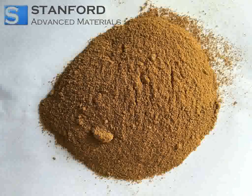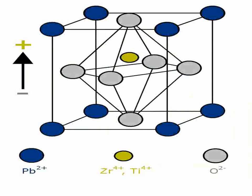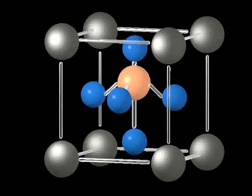Lead zirconate titanate is an inorganic compound with the chemical formula PbZrxTi1-xO3, where 0 ≤ x ≤ 1. Also called PZT, it is a ceramic perovskite material that shows a marked piezoelectric effect, meaning that the compound changes shape when an electric field is applied. It is a white-to-off-white solid.